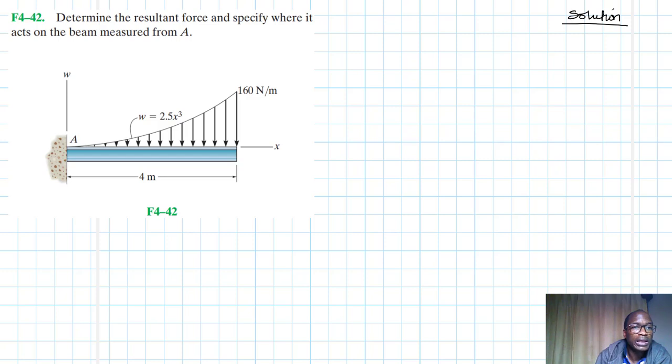For this particular problem, let's assume our resultant is going to be somewhere like that, and this resultant is equal to FR. This location is also there which we are going to write as d.